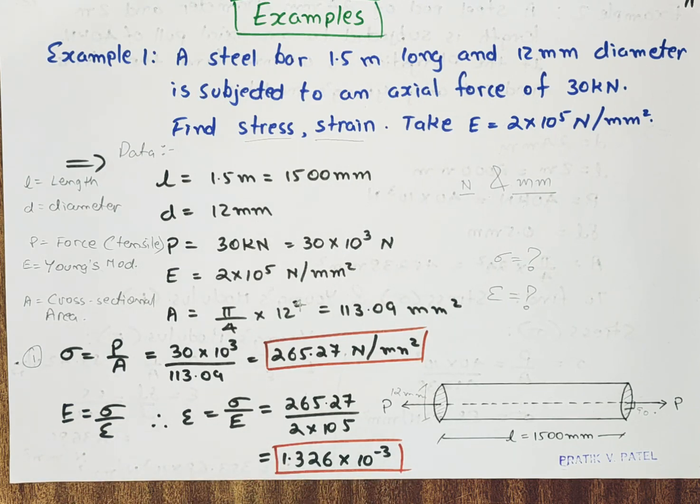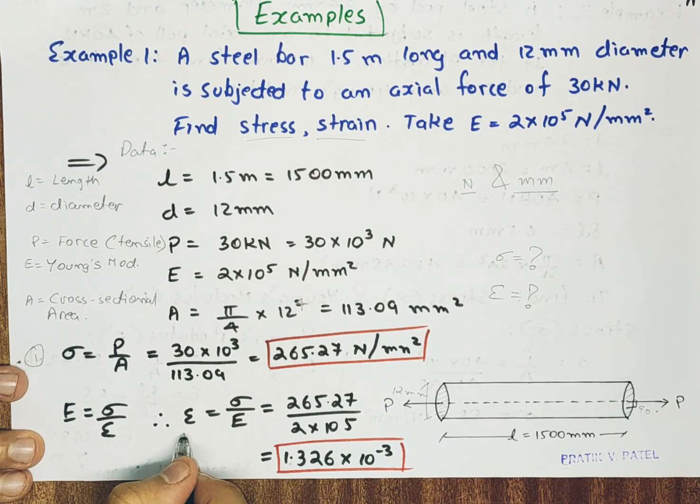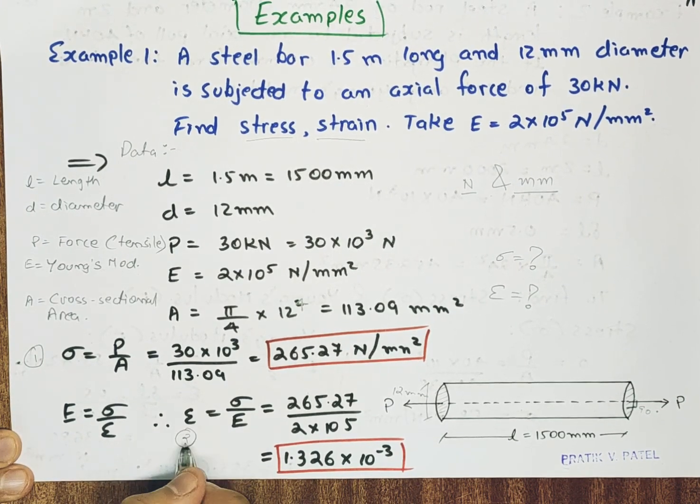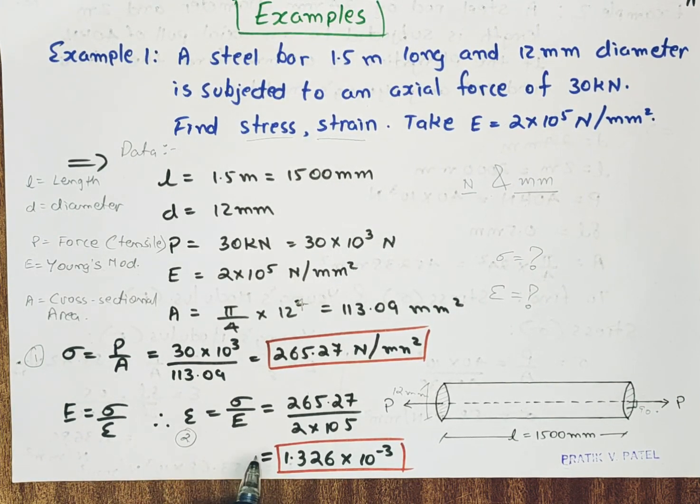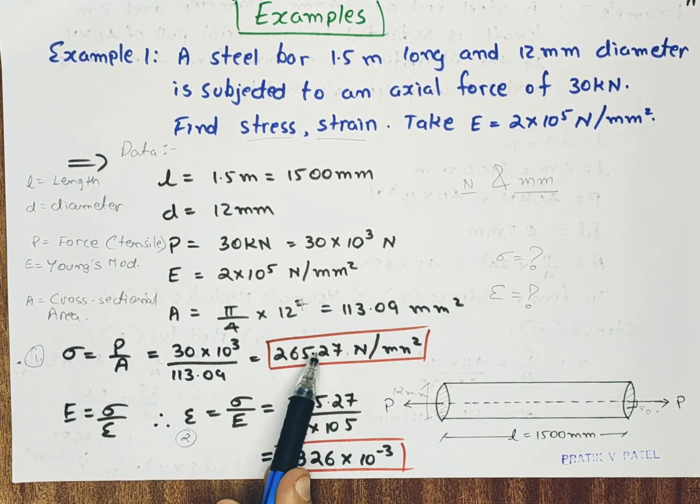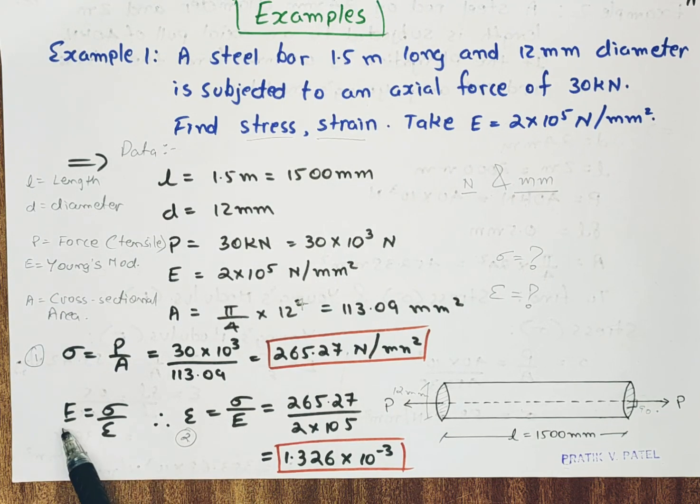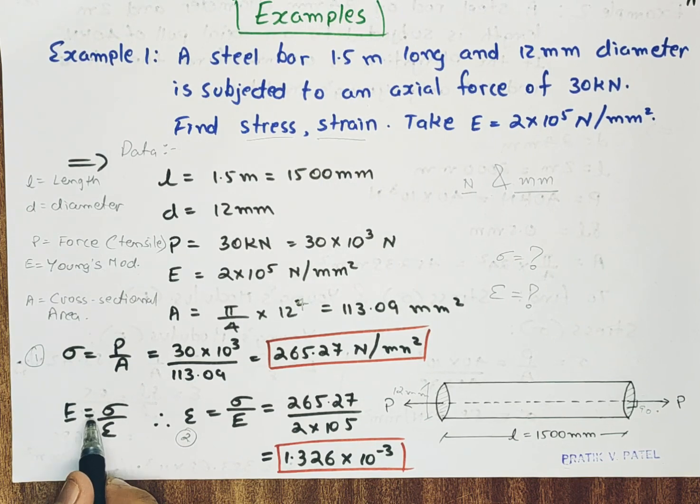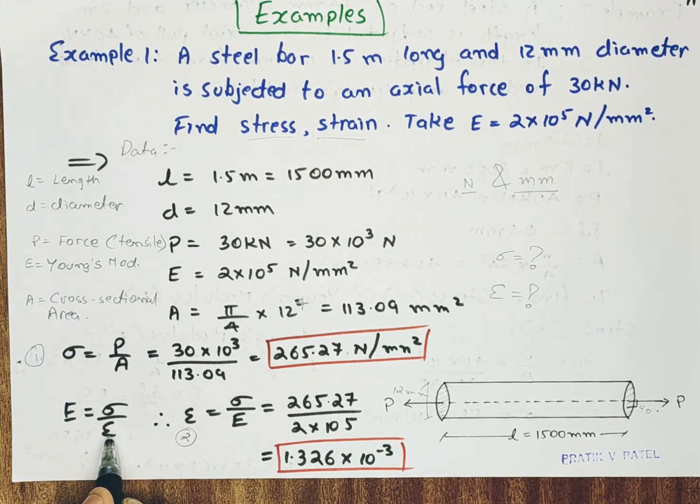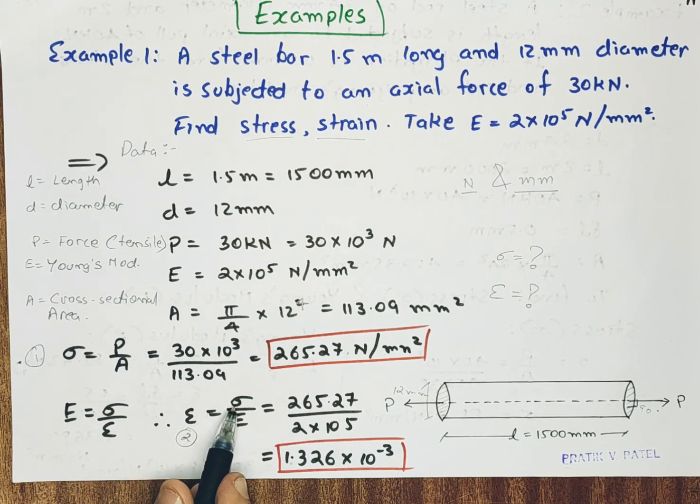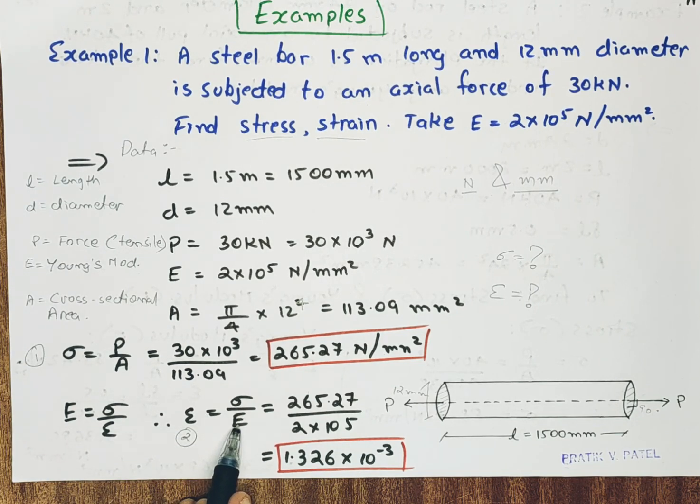Then after for finding strain. Epsilon is equal to sigma by E. This formula comes from modulus of elasticity is equal to stress by strain. Here I have made strain the subject. Strain is equal to stress upon modulus of elasticity.